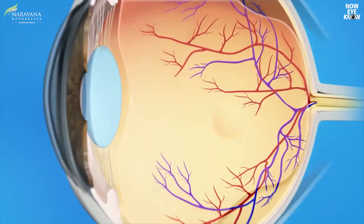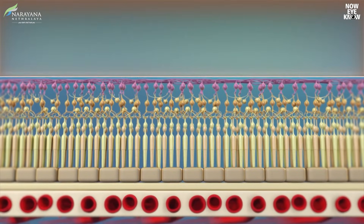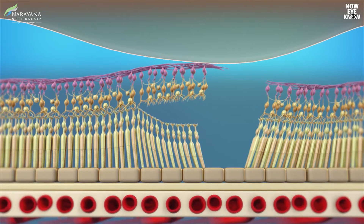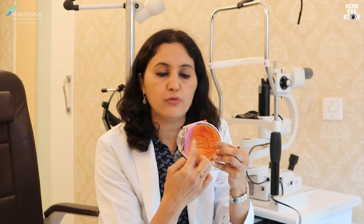Vitreous hemorrhage commonly happens in diabetic patients. Vitrectomy can also be done for retinal conditions where a hole develops in the retina called a macular hole, which causes central vision to come down. To close this hole, vitrectomy may be required. It is also considered when certain membranes develop on the surface of the retina, which need to be removed to improve vision.